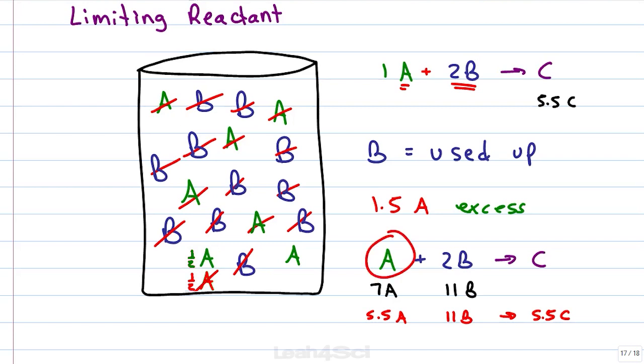When we matched up 1A for every 2B, we noticed that we were able to use up all 11 molecules of B and still have a little bit of A left over by comparing them to each other. Now in your limiting reactant problems, they're going to be more complicated so we want to use a more mathematical approach but I want to make sure you first understand what is going on here.